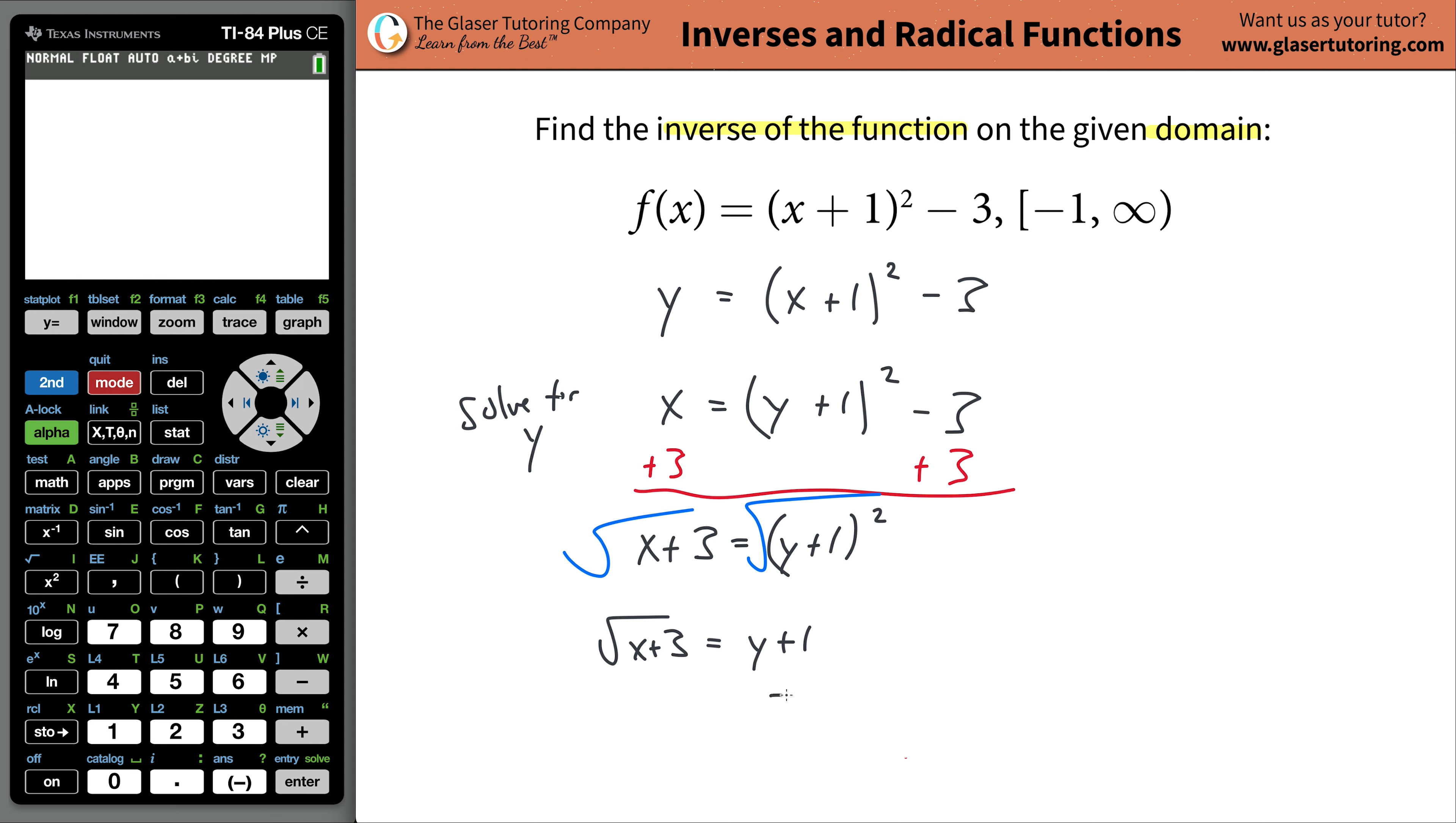And then we can easily solve this now for y, just subtract one from each side, and it turns out that this is going to be x plus three minus one is equal to then our y. And that's basically it. That's the inverse function.